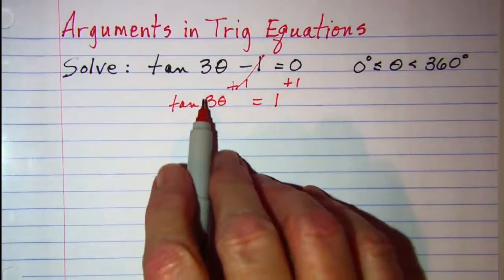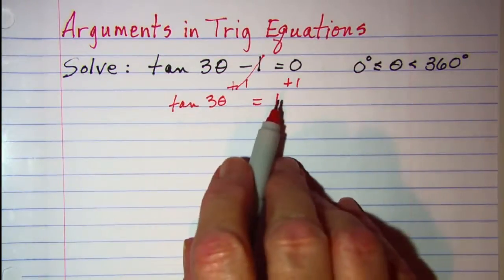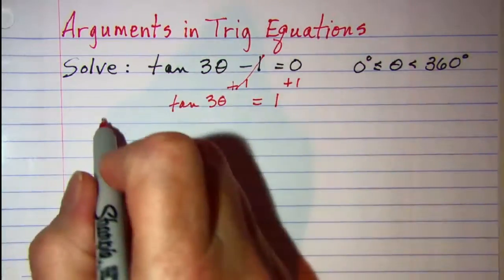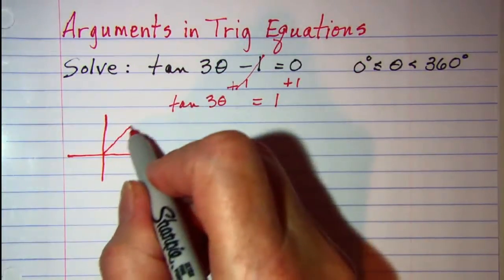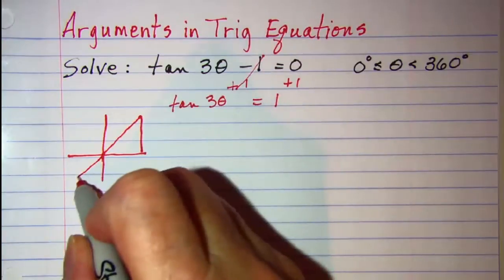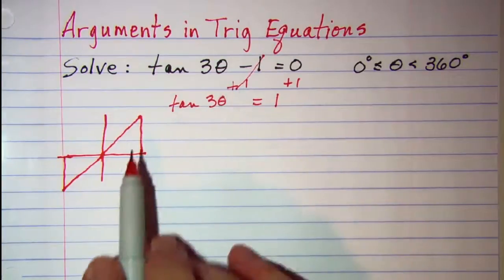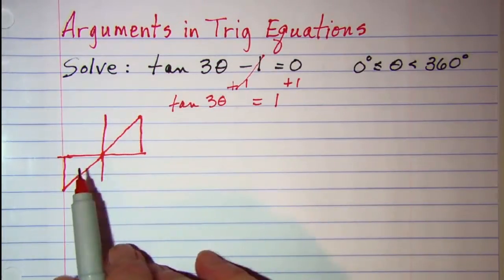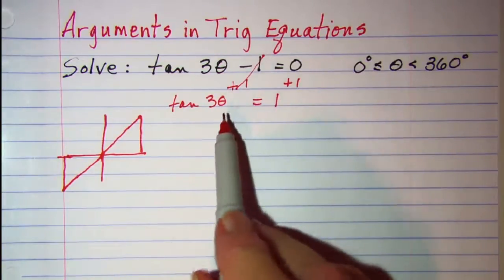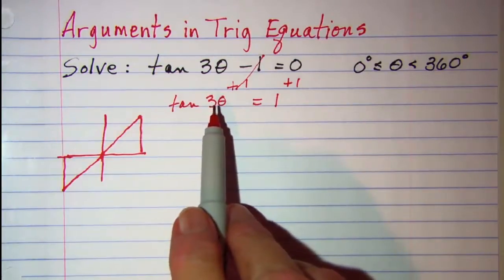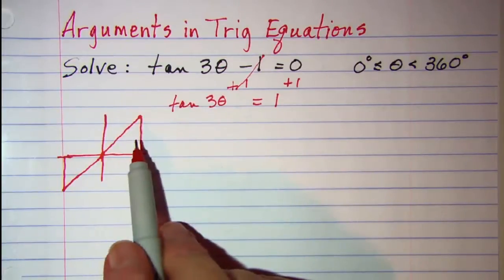Now we need to ask ourselves what angle will have a tangent of 1? Well, we know that our tangent is positive in quadrant 1 and quadrant 3. So we know that our angle, our 3θ, has to be in one of these two quadrants or both. And so what we're going to do is list those angles that 3θ could be equal to.